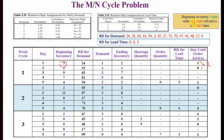Let us begin. Cycle one, day one: beginning inventory is three. The random digit for demand is 24, which falls in a range corresponding to demand of one. So we have three products at the beginning and demand is one, giving an ending inventory of two. There is no shortage quantity because we still have two products. No order quantity, since we only order on the last day. Days until order arrives is one.